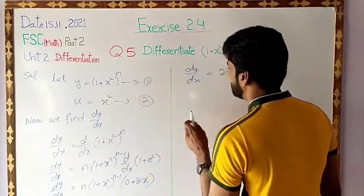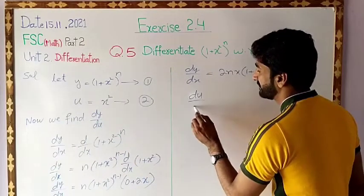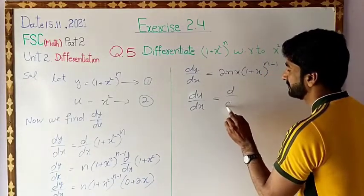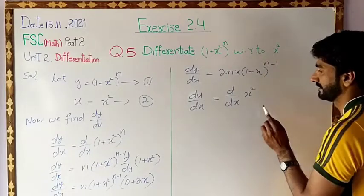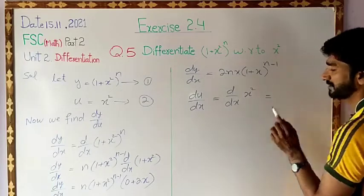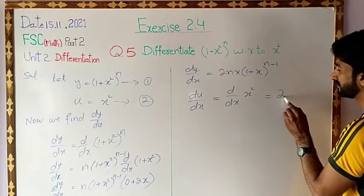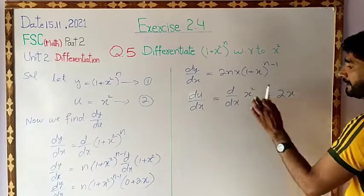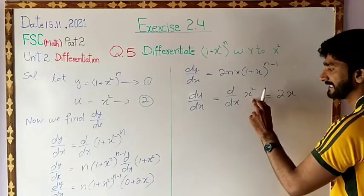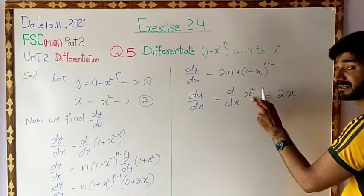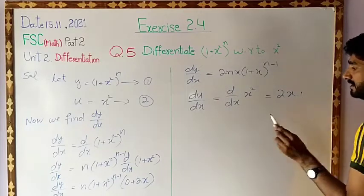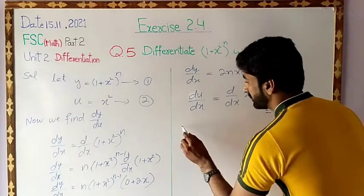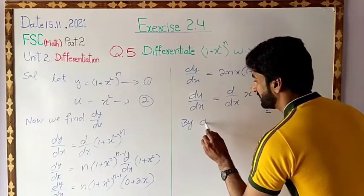Now we take the derivative of the second equation with respect to x. du/dx equals d/dx of x square. We use the power rule: the power comes down, giving 2x to the power 2 minus 1, which is 2x to the power 1. The derivative of the base x with respect to x is 1. So the final answer is du/dx equal to 2x.